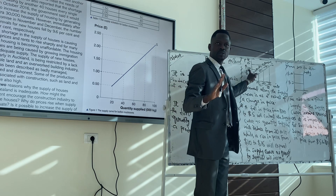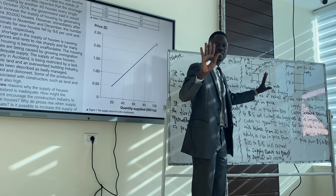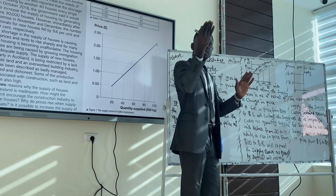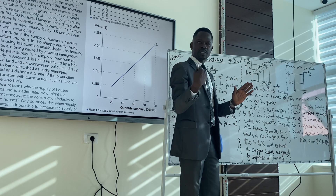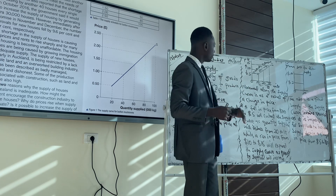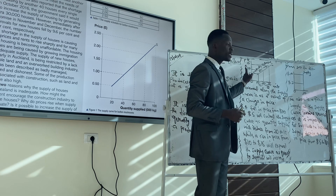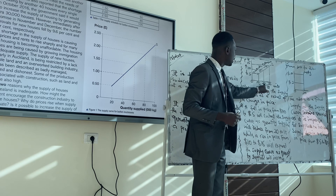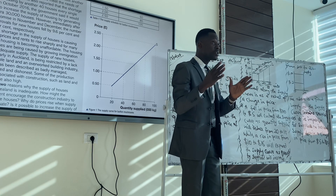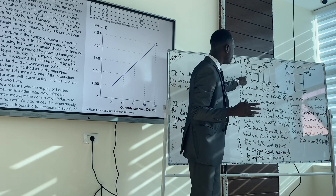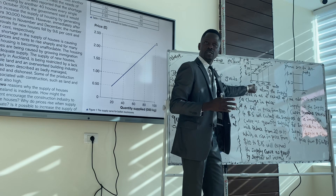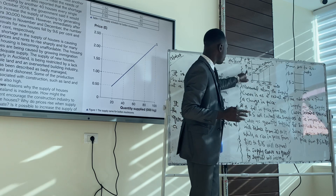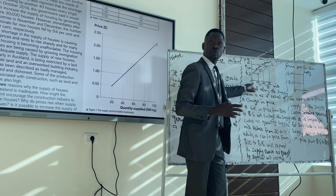We assume the market price is at $10. A falling price from $10 to $5 brings about a fall in the quantity supplied from 20 to 10. So there's a contraction based on the law of supply: the lower the price, the lower the quantity supplied. The price was $10 and the quantity supplied was 20. As soon as the price fell from $10 to $5, the quantity supplied reduced from 20 to 10.